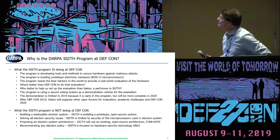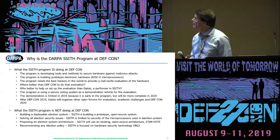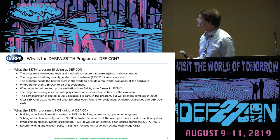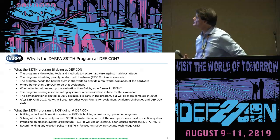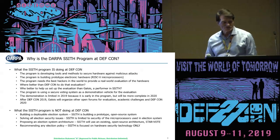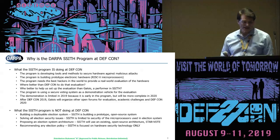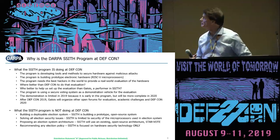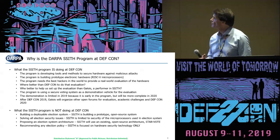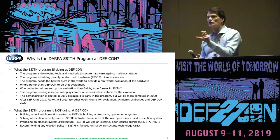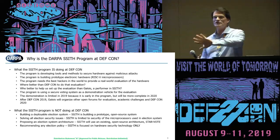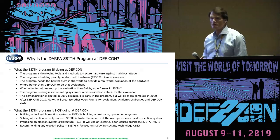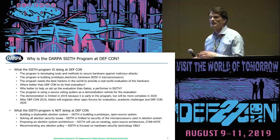So why are we here? The program is here at DEF CON to develop tools and methods to secure hardware against malicious attacks, building prototype RISC-V microprocessors. The program needs the best hackers in the world to provide a real-world evaluation of the hardware, and I can't think of a better place than DEF CON or a better group to set that up than Galois. The demonstration is limited in 2019 because it's early in the program, but it will be more complete in 2020, and after DEF CON 2019 there will be other open forums.